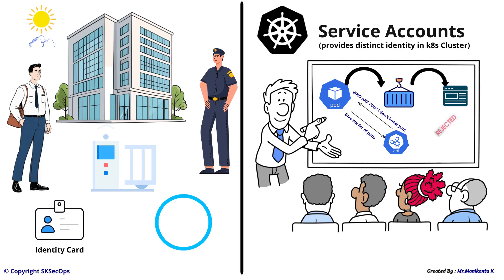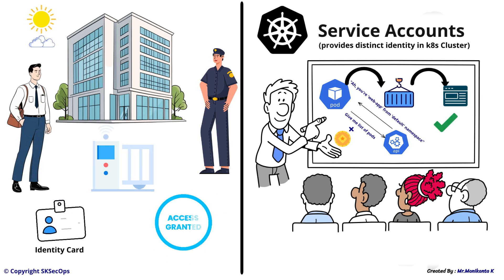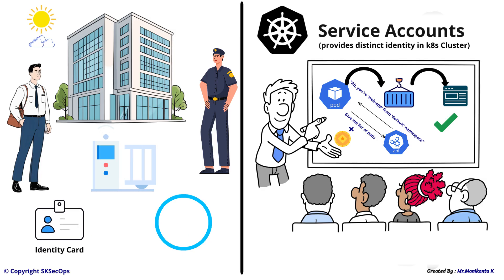So the pod attaches a token with the request and asks again, here is my token, please give me the list of pods. Then the API server checks the token and says, now I understand you are the web app from the default namespace. After that, the API server accepts the request and sends the list of pods back to the application based on the permissions.